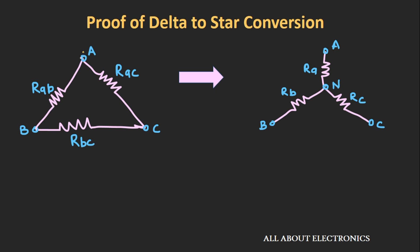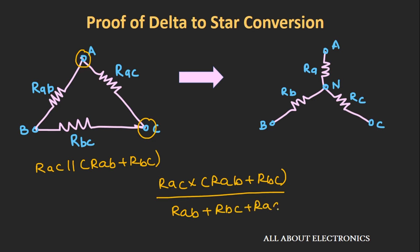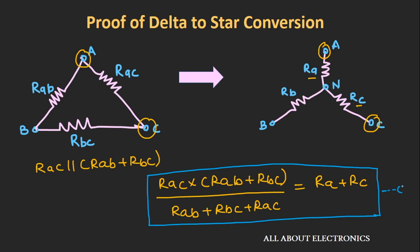Likewise, the resistance between node A and C can be given as RAC in parallel with the series combination of RAB plus RBC, that is RAC multiplied by (RAB plus RBC) divided by the summation of all the resistors, that is RAB plus RBC plus RAC. And in the equivalent Y network, the resistance between node A and C will be the summation of resistors RA and RC, that is RA plus RC. Let's call this equation number 3.